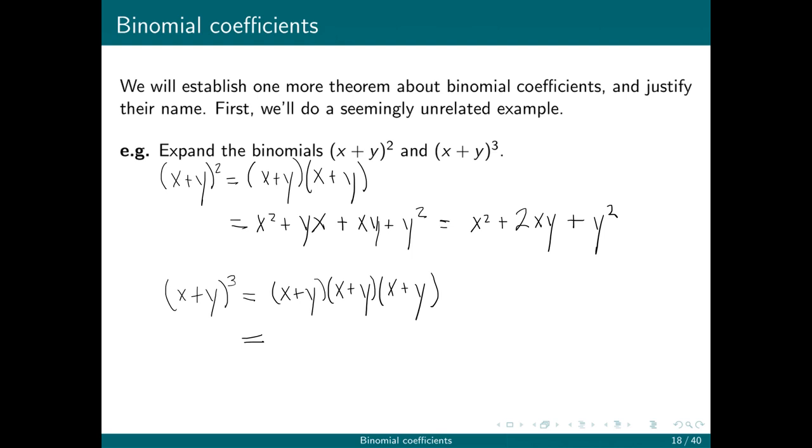So my first term is going to be x times x times x, so that'll be x cubed. My second term, I'll do x times x times y, and that gives me the term x squared y. I could just as easily have done x, y, x, or y, x, x.